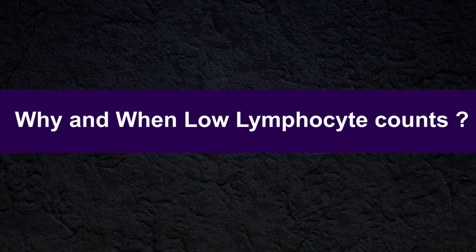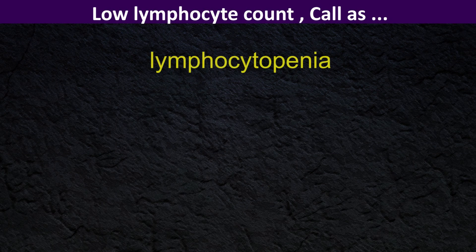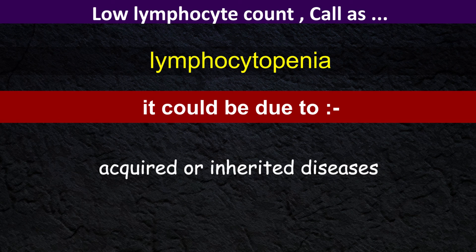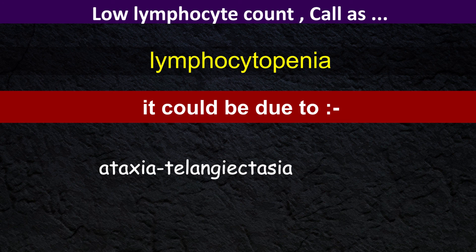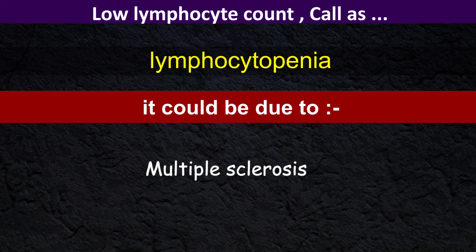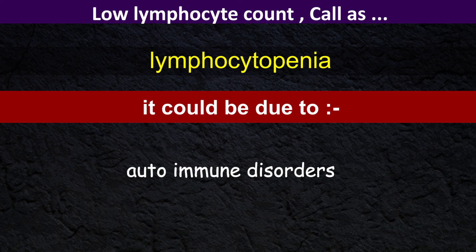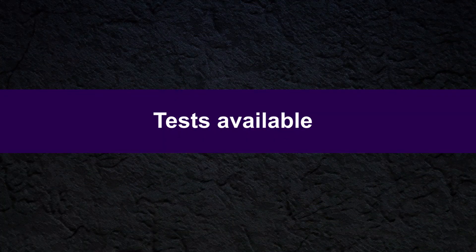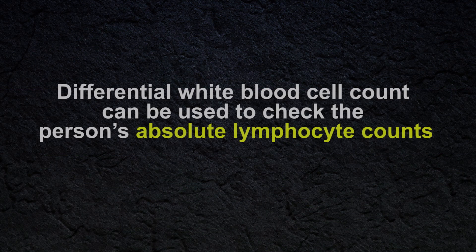Low lymphocyte count is called lymphocytopenia, and it could be due to either acquired or inherited diseases. Examples include the inherited disease ataxia-telangiectasia, multiple sclerosis, autoimmune disorders, AIDS, and other infections.